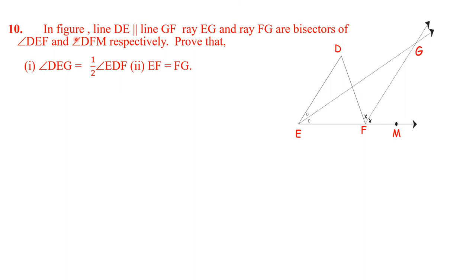Tenth example. In the figure, line DE is parallel to GF. EG and FG are bisectors of angle DEF and angle DFM. This is the given part. To prove: angle DEG is half of angle EDF.